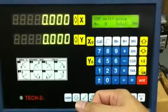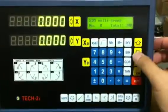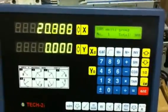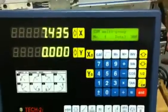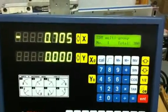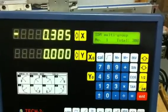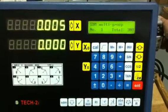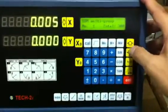And then I go to the second hole by pressing the arrow down key and move it to zero. And then you drill a hole.